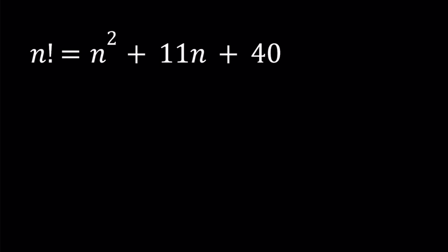Let's first of all notice that n equals 0 does not work. Because if you replace n with 0, you get 40 on the right hand side and 0 factorial which is 1 on the left hand side. So definitely n equals 0 is not a solution.